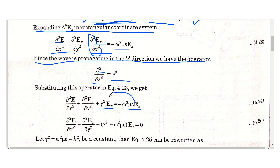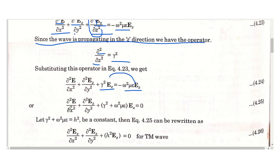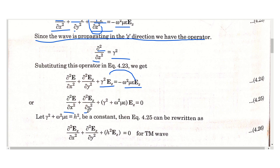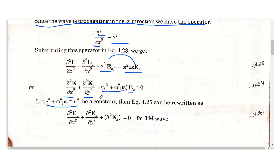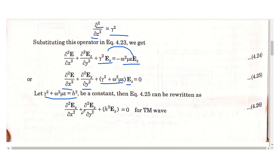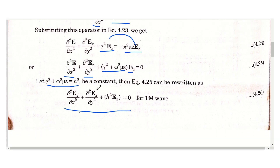Moving terms to one side and taking Ez as common: (d²Ez/dx²) + (d²Ez/dy²) + (gamma² + omega²·mu·epsilon)·Ez = 0. We assume h² = gamma² + omega²·mu·epsilon. Substituting, our equation becomes: (d²Ez/dx²) + (d²Ez/dy²) + h²·Ez = 0. This is the TM wave equation.